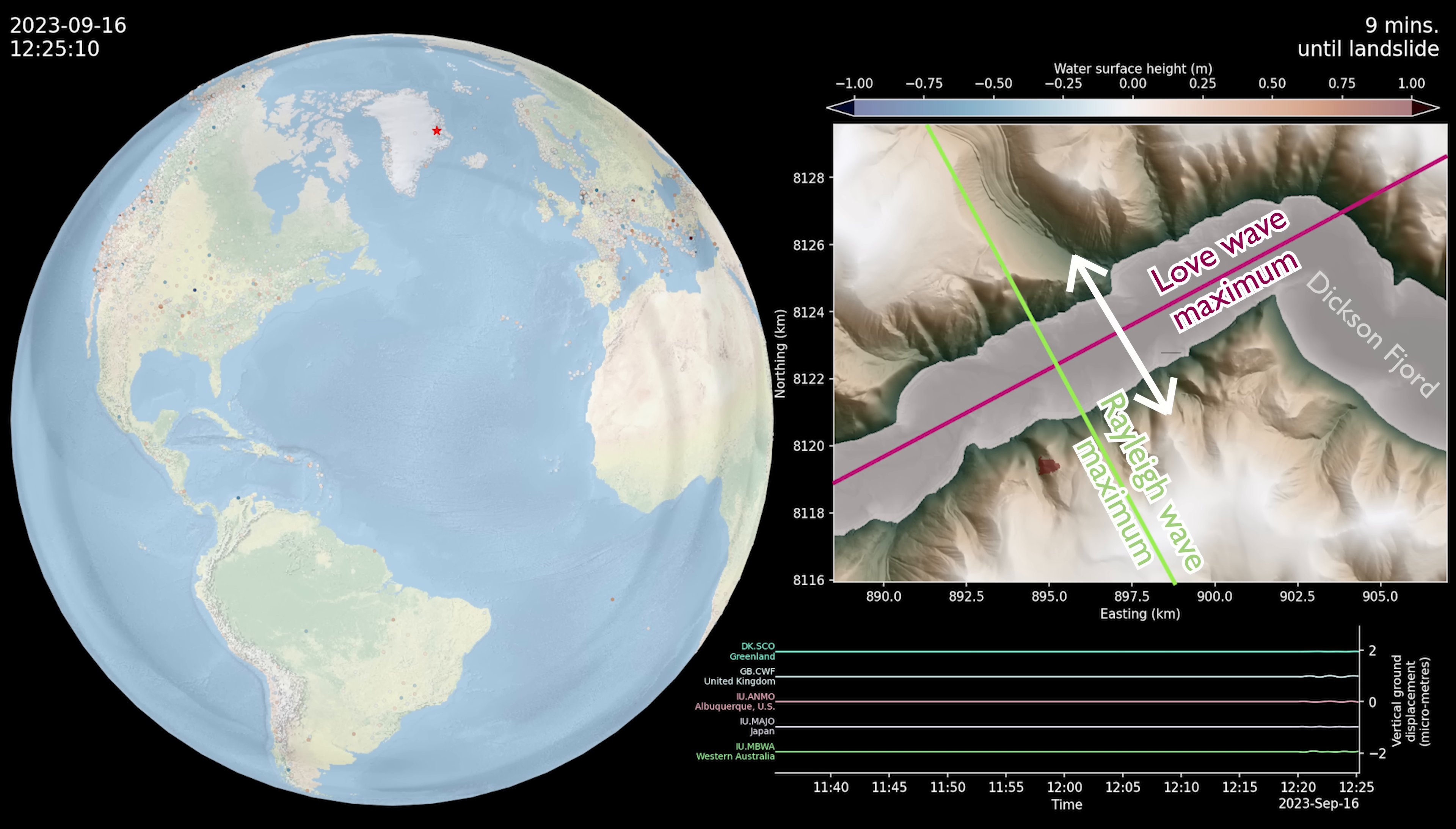The dominant oscillation period of 90 seconds of the seismic wave also matches the resonant frequency of the fjord, if we account for its width, just three kilometers, and its depth of 540 meters.